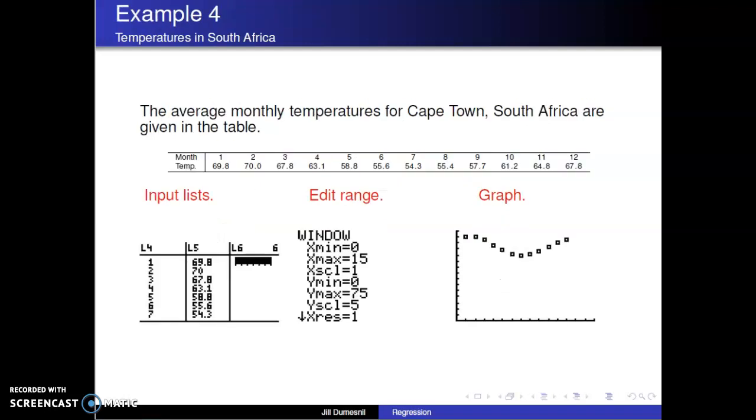Finally, let's consider the average monthly temperatures in Cape Town, South Africa. We've represented each month by the number based on a calendar year. The months represent the explanatory variable, and the average temperature is the response variable. We put the given values in LIST4 and 5.